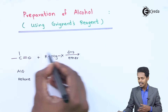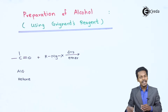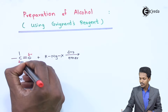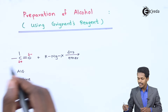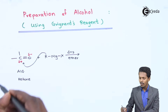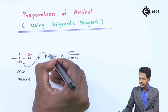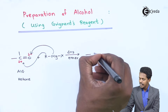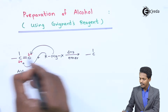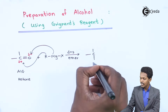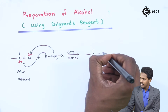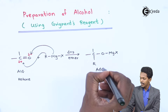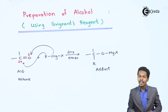The MgX is attracted to the oxygen atom, which has a partial negative charge, while the carbon atom has a partial positive charge. Therefore, the R group will attack on the carbon atom and the MgX will attack on the oxygen atom. This gives us an intermediate adduct where carbon is attached to R and oxygen is attached to MgX.